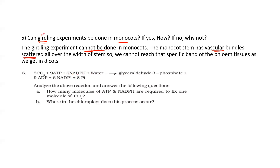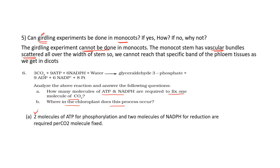Sixth question: given this equation, how many molecules of ATP and NADPH are required to fix one molecule of carbon dioxide? Two molecules of ATP and two molecules of NADPH are required per carbon dioxide fixed. The two molecules of ATP are used for reduction and one molecule of ATP is used for regeneration. So in total, three molecules of ATP and two molecules of NADPH are used per one molecule of carbon dioxide fixed.